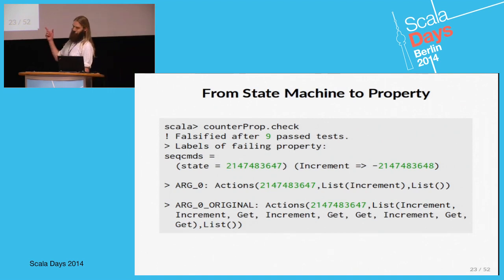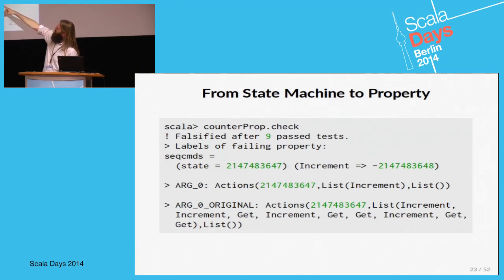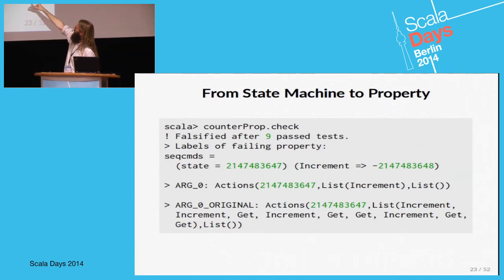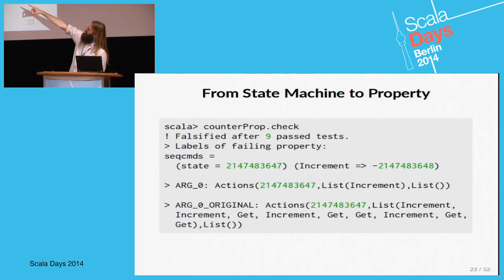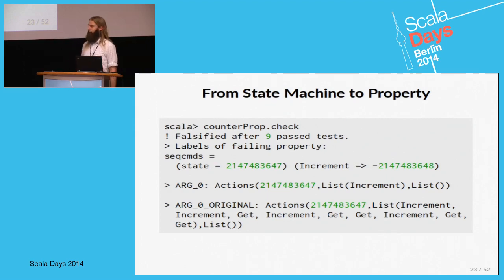ScalaCheck's simplification feature that tries to minimize failing test cases also works for the commands case. The original argument was an initial state of max int and then a sequence of increment, increment, get, increment, get, get, increment. But ScalaCheck simplified it and noticed that just running increment on this initial state triggers the same error — presenting us with just a minimal command sequence.